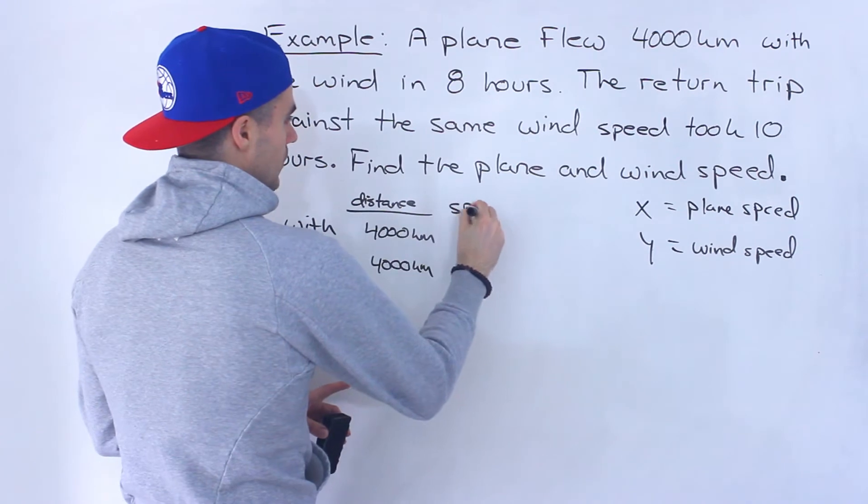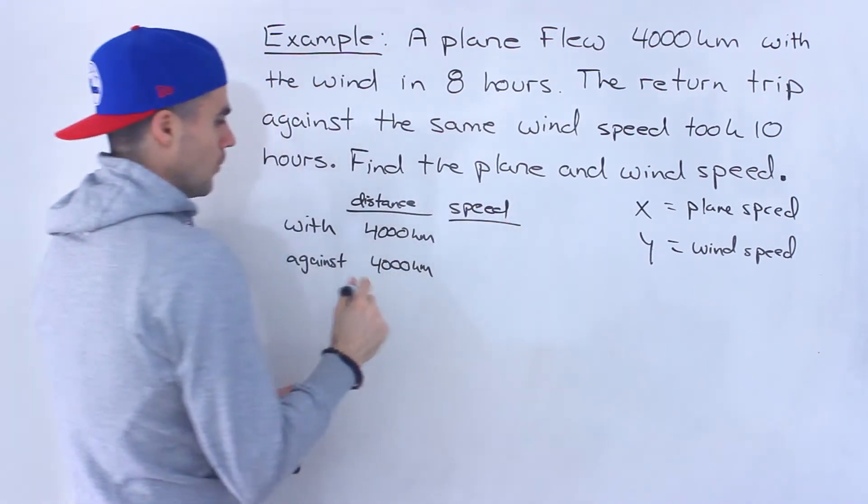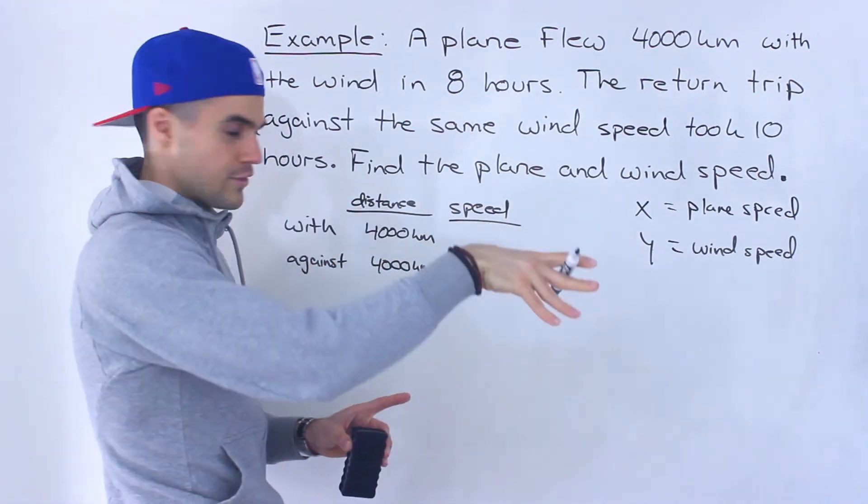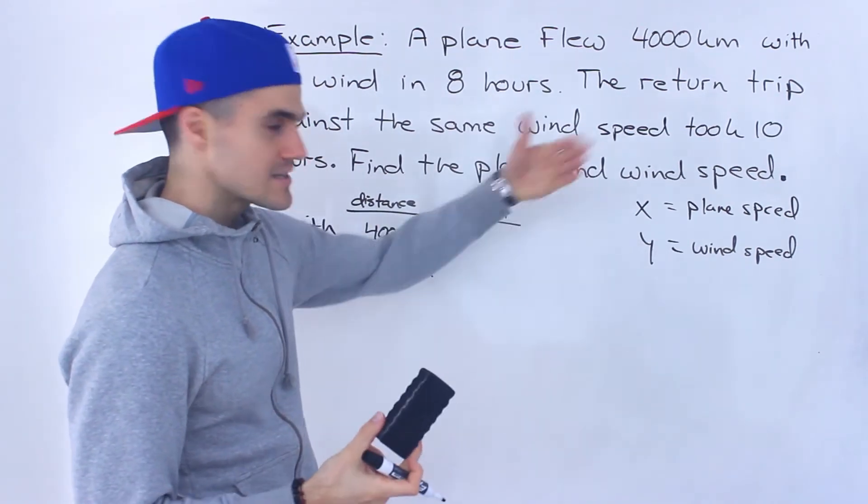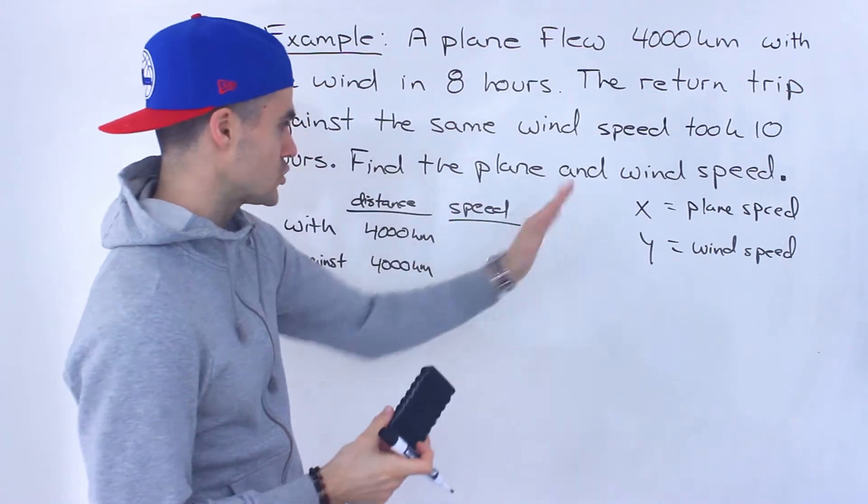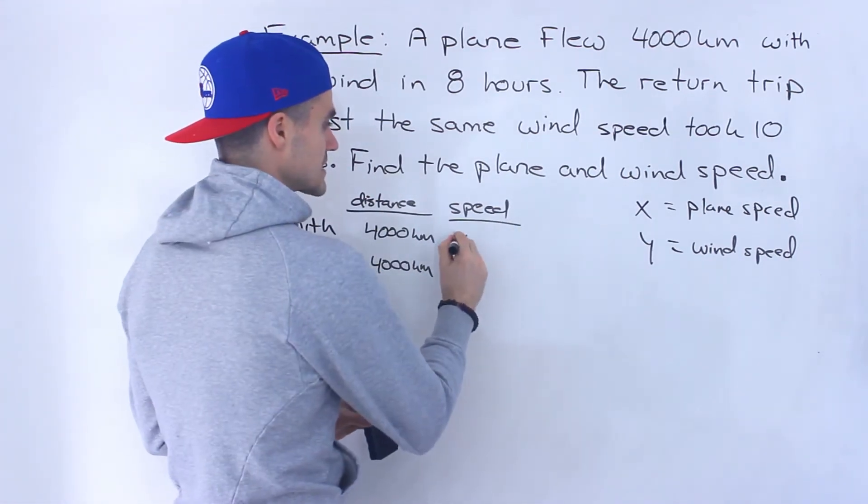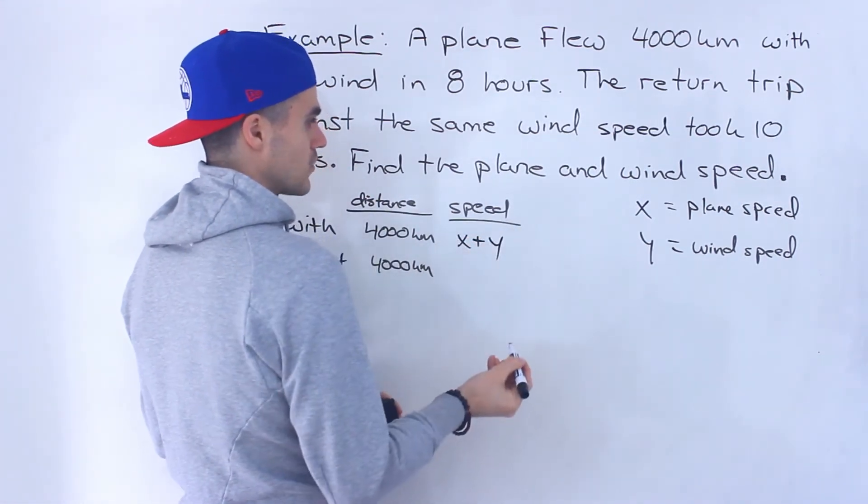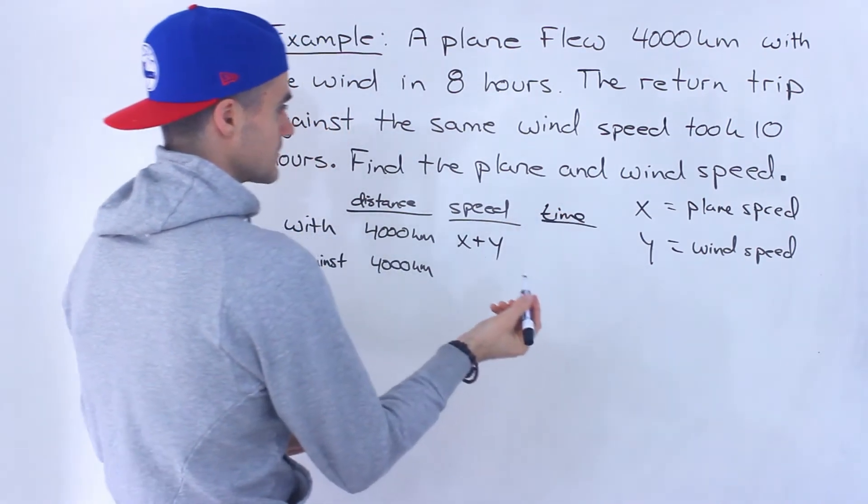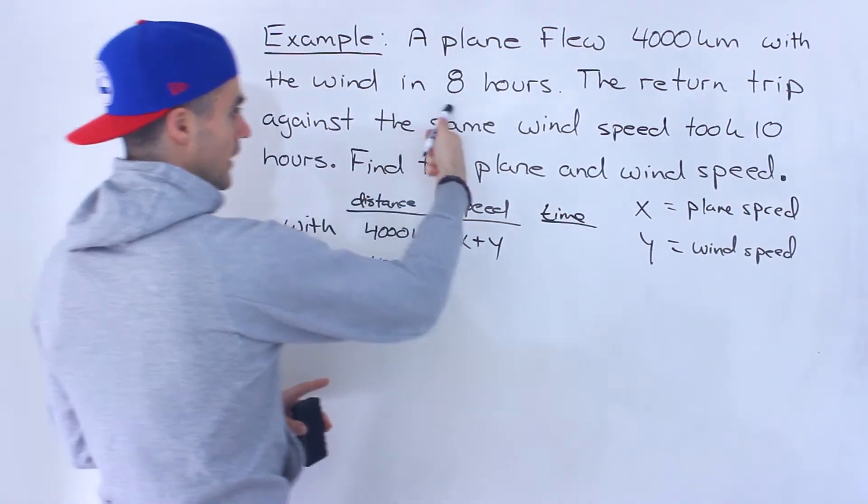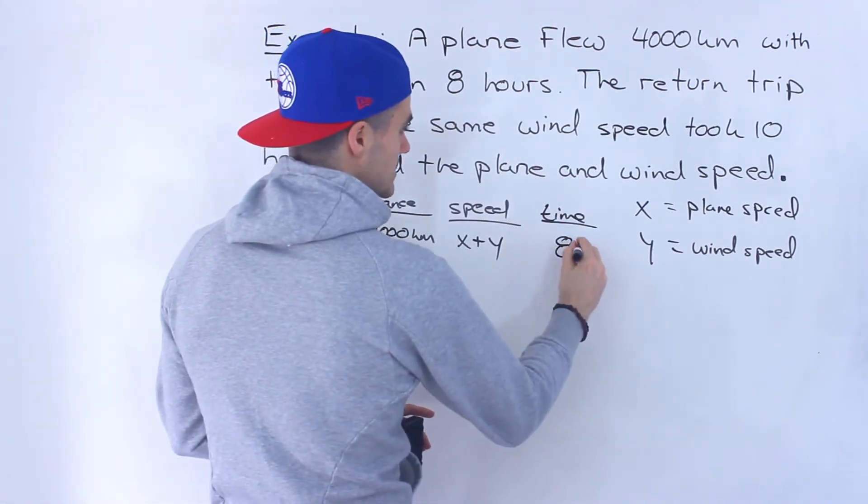But what's the speed going to be in each one? Well when we're flying with the wind then the speed of the plane it's going to be its own speed, X, plus the wind speed, right? The wind is pushing it so the speed in this case is going to be X plus Y. And then the time it takes traveling with the wind is going to be eight hours.